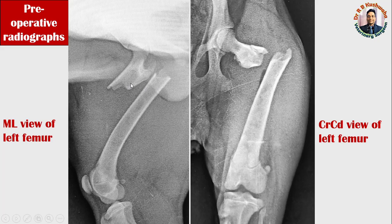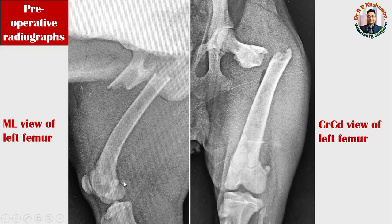If you see carefully, there is a radiolucent line in this proximal fracture fragment. The distal fracture fragment is very long. You can also see the patella, the condyles of the femur bone, and the two small sesamoid bones we normally call the fabellae. This is the proximal extremity of the tibia. If you see carefully, the epiphyseal plate is still not fused — it is intact — which confirms this is definitely a radiograph of a young animal.